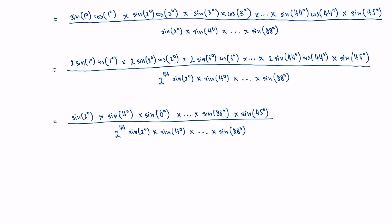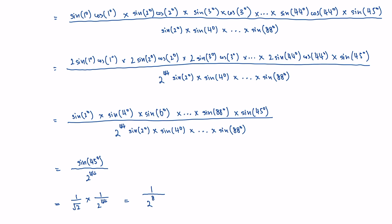Now we're very close. Sine of 2 degrees in the top cancels with sine of 2 degrees in the bottom, sine of 4 cancels with sine of 4, and all terms cancel up to sine of 88. What remains is sine of 45 over 2 to the power of 44. Sine of 45 is 1 over root 2, so this is 1 over 2 to the power of 44 times root 2, which equals 1 over 2 to the power of 89/2. And that's the answer to part G.